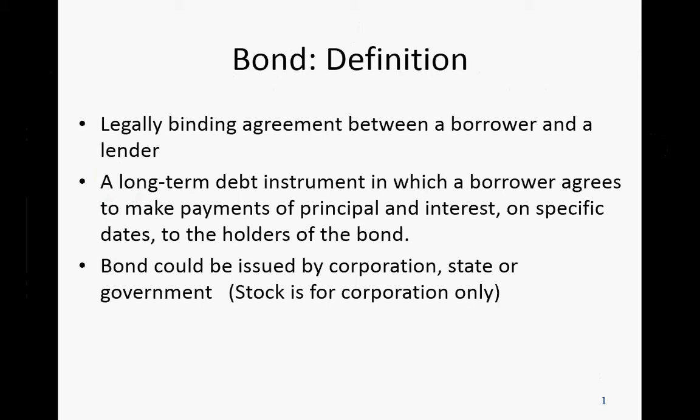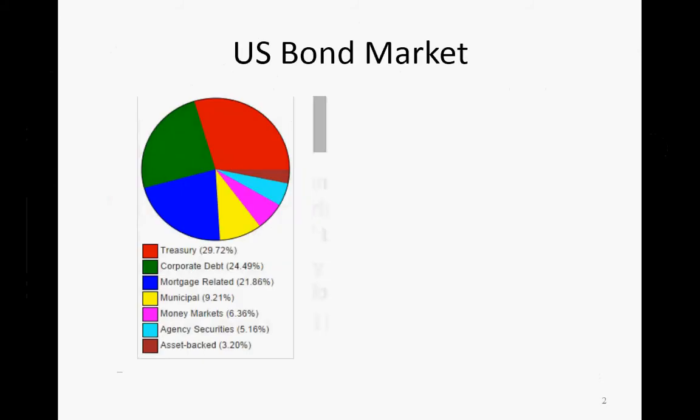Since the issuer of a bond could be many, the bond market is definitely greater than the stock market. In the globe, there is a $100 trillion bond market, and the stock market is roughly 60% of that. In the US, you can see this pie chart — most of the bond is issued by the US federal government, the Department of Treasury. This is called a Treasury bond.